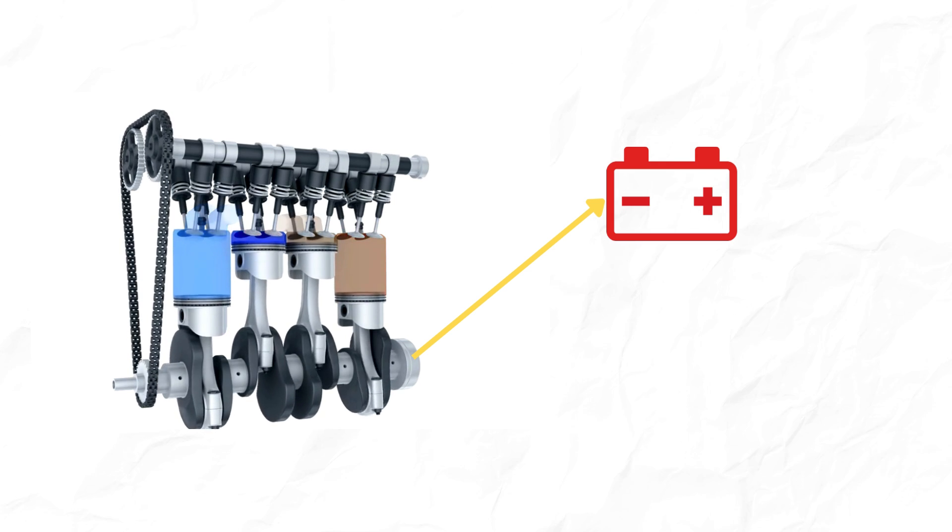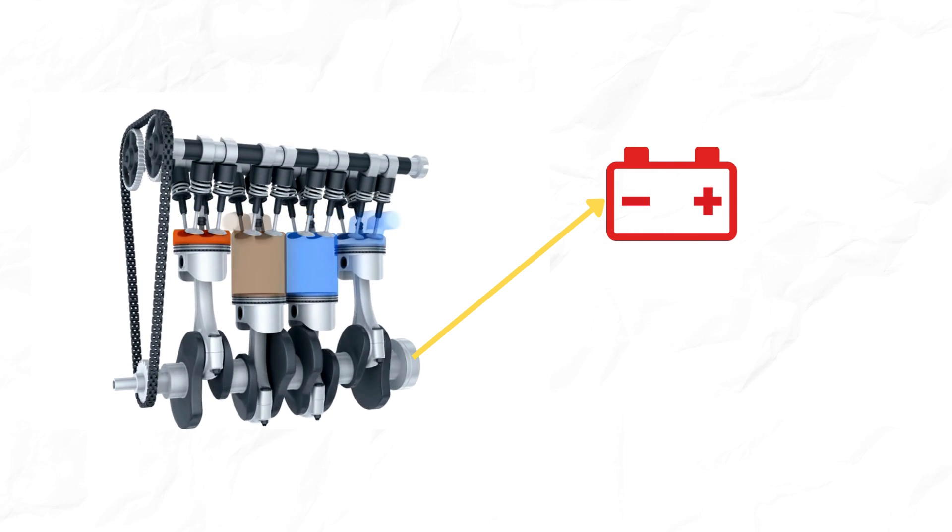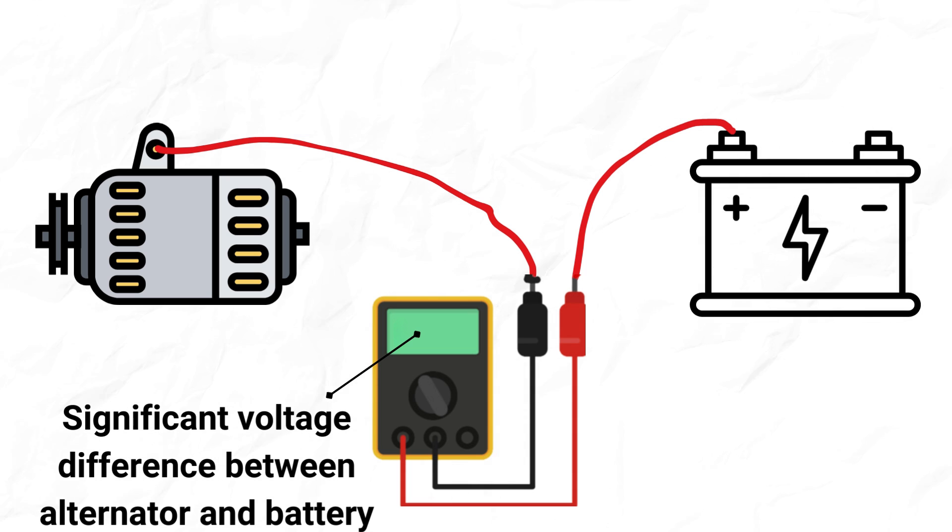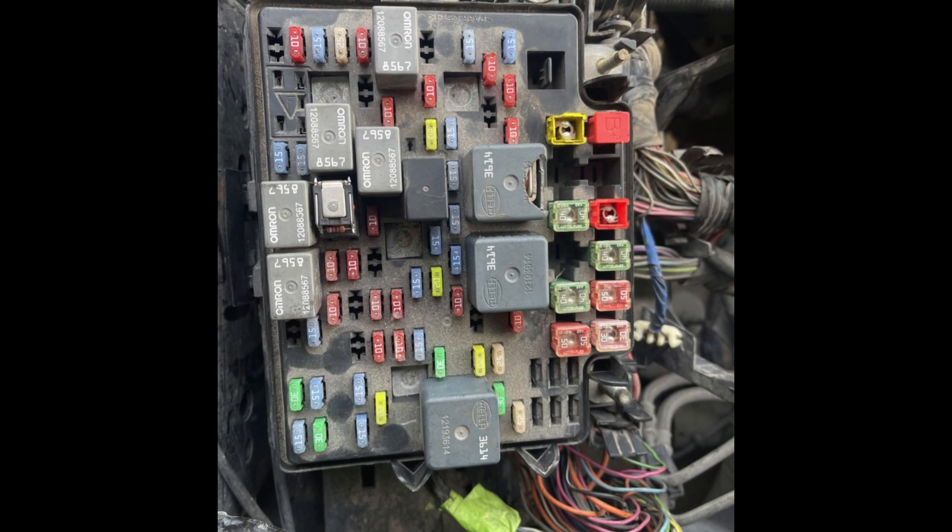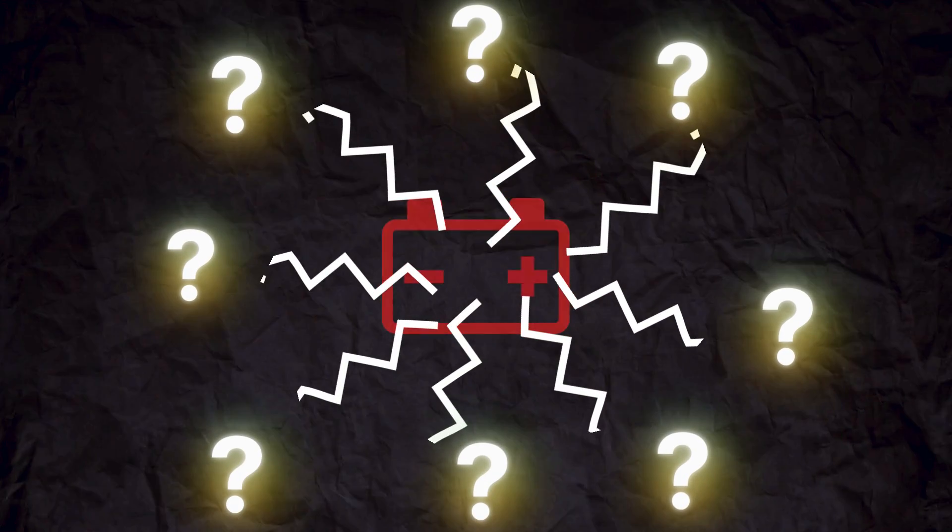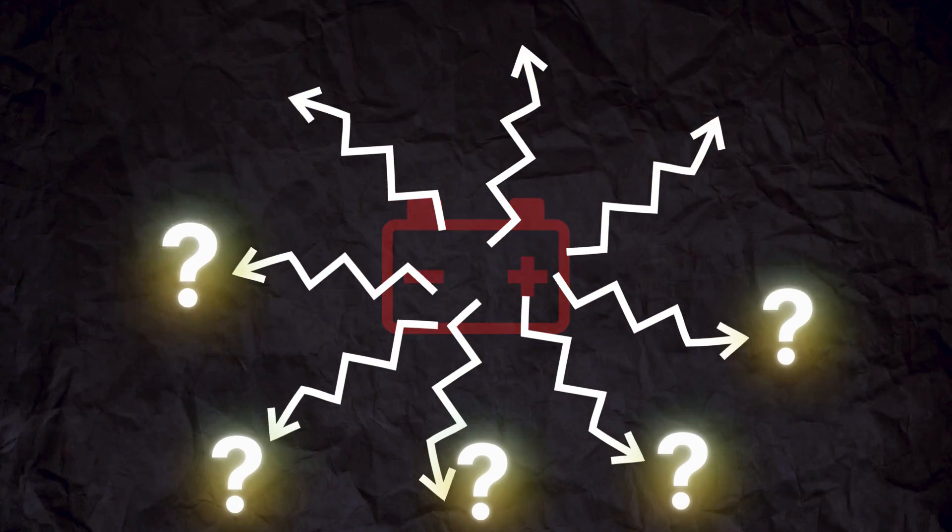If the engine is running and the battery light comes on, it means there is a significant voltage difference between the battery and alternator. It either means the alternator is not charging properly, or there is an issue anywhere in the charging system. Several potential culprits cause your battery light to stay on.